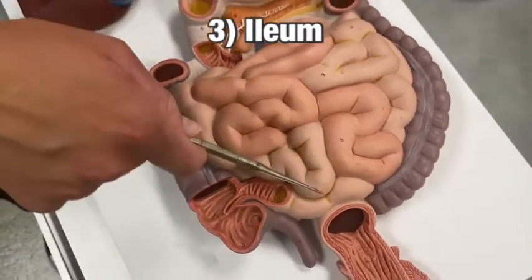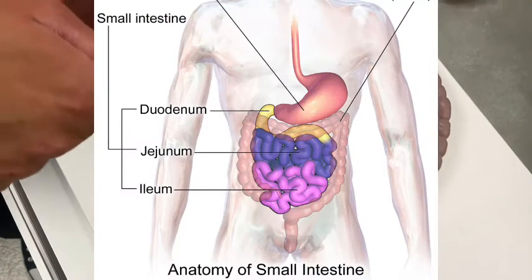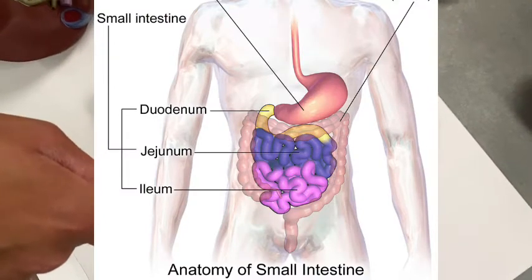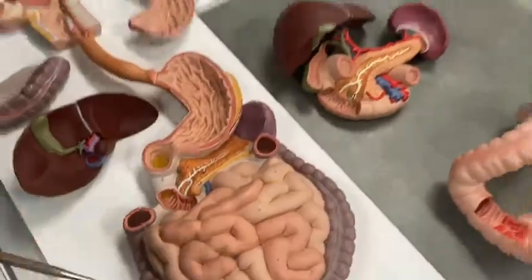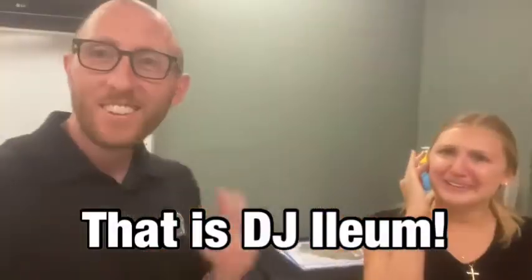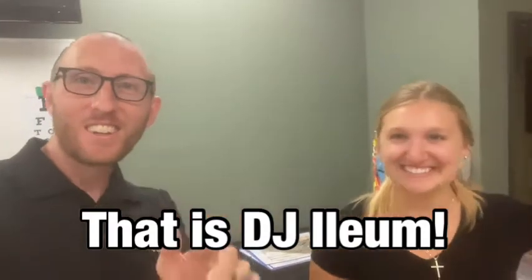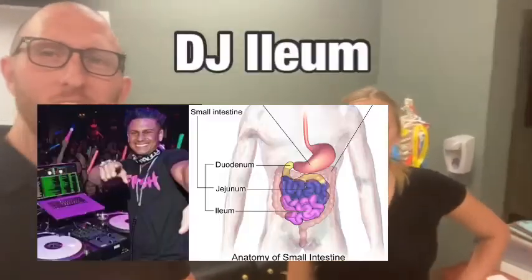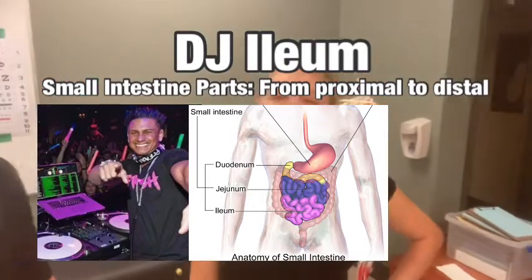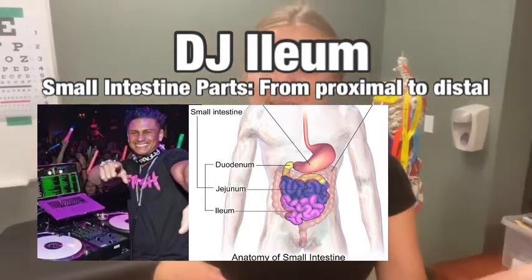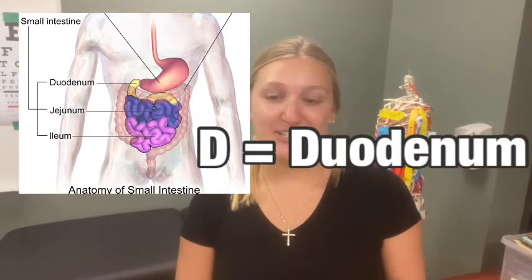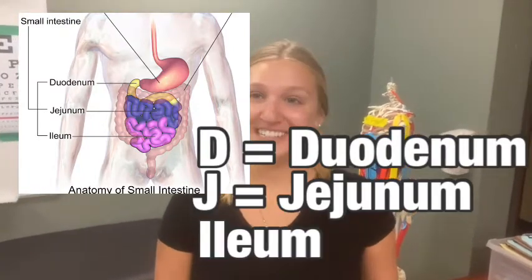This will be highlighted better popping up on your screen. Do you guys hear that club music? I think that's DJ Ilium! DJ Ilium is how you will memorize the small intestine. We've got the D — that is duodenum. The J — jejunum. And ileum. DJ Ilium.